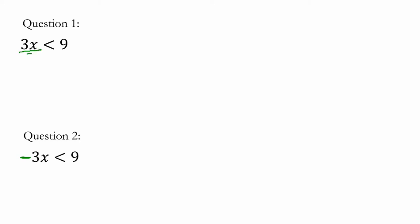Now, that changes a lot of things. In the first inequality, we can divide both sides by 3, and we get x is less than 3. So x can be anything smaller than 3, and this inequality will be true.